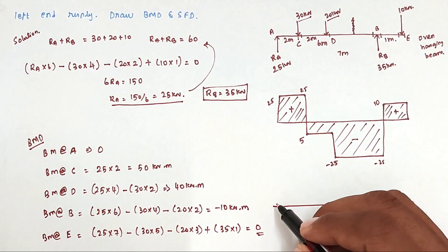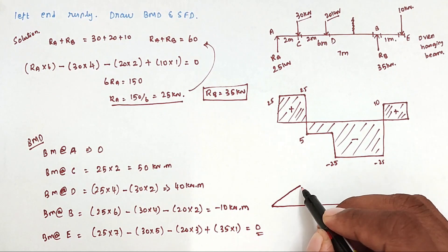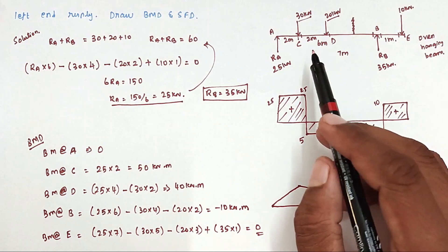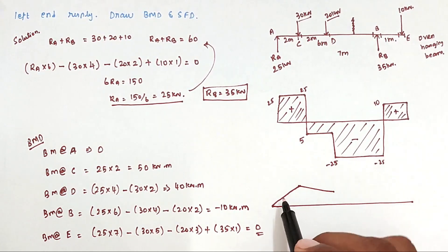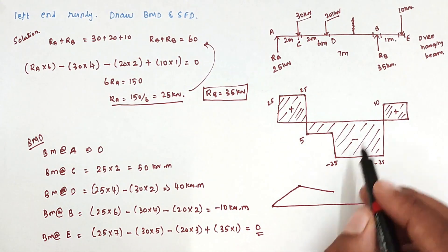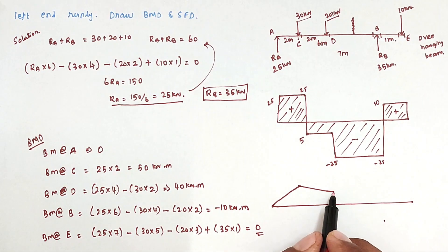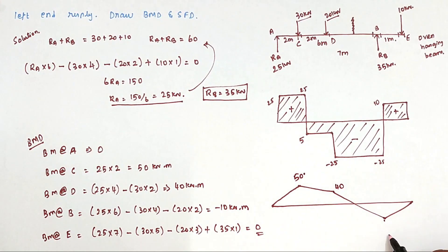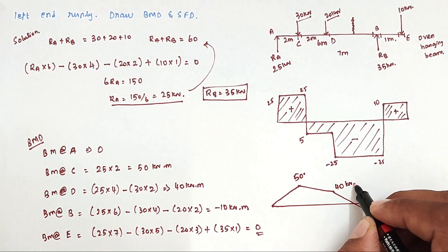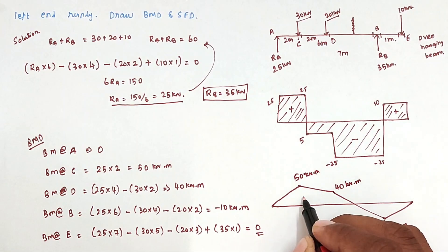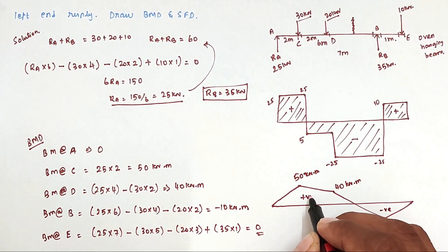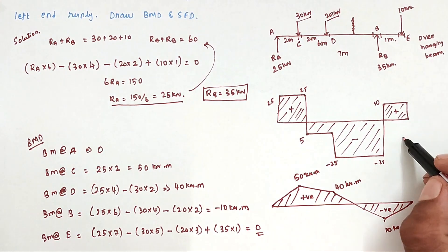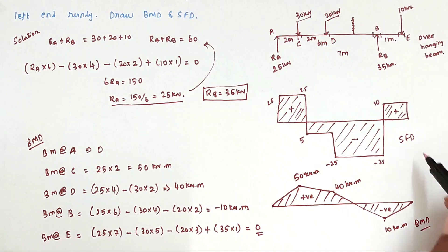Now we can draw the bending moment diagram. Since only point loads are present (no UDL), we draw straight lines between the calculated values. Starting at 0, rising to +50 kNm at C, then +40 kNm at D, dropping to −10 kNm at B, and returning to 0 at E. The area above the baseline is positive and below is negative. This completes the SFD and BMD. Thank you, we will see more in the next video.